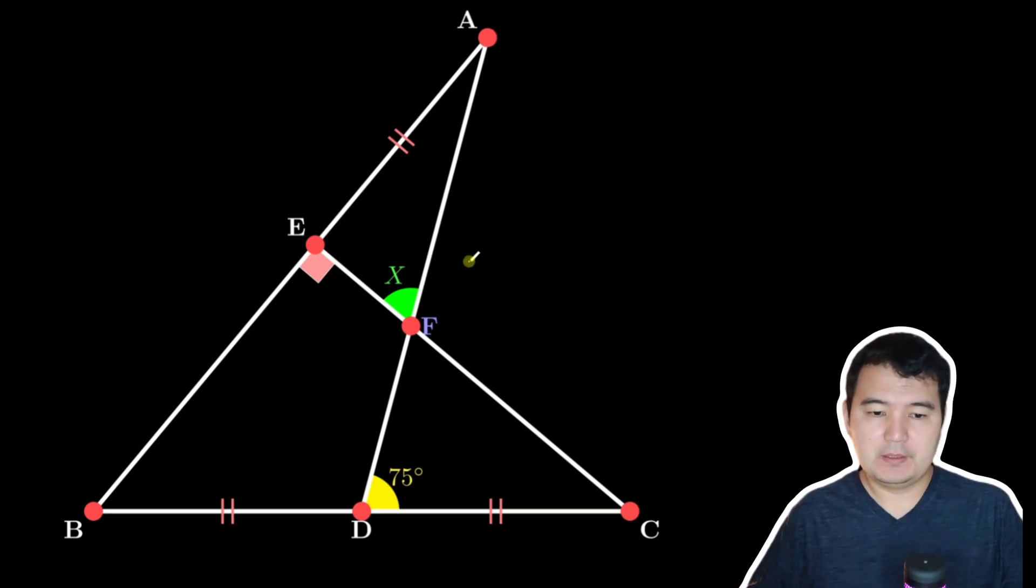In the given figure, we are looking to find this angle X. So what we are given: these three equal segments and a 75-degree angle here.